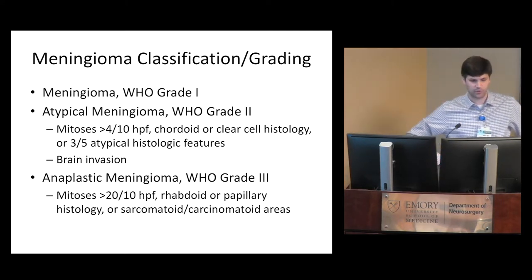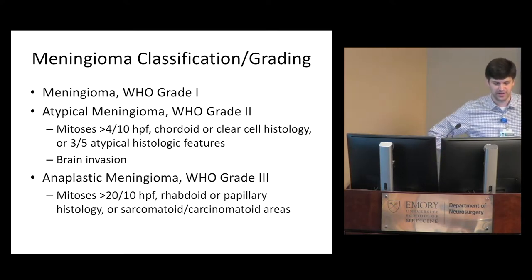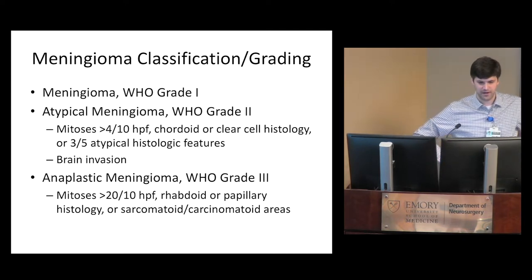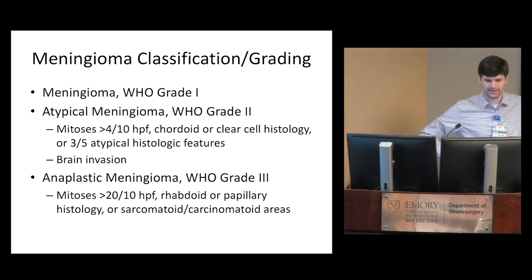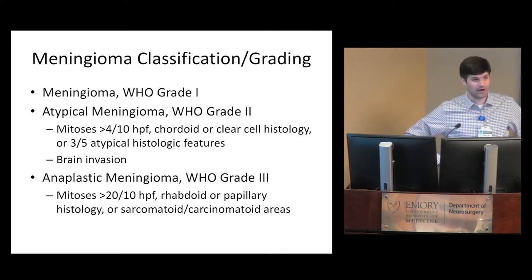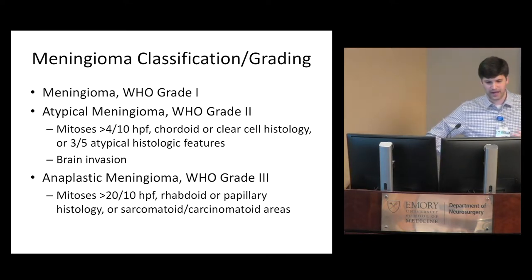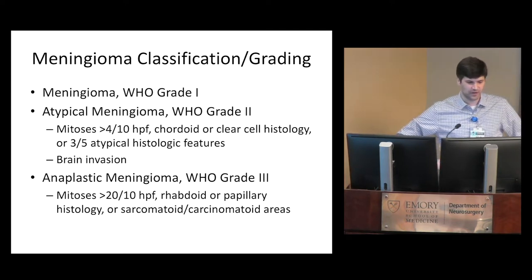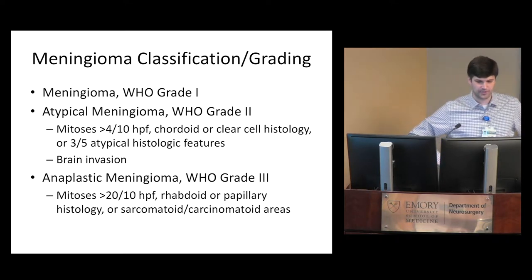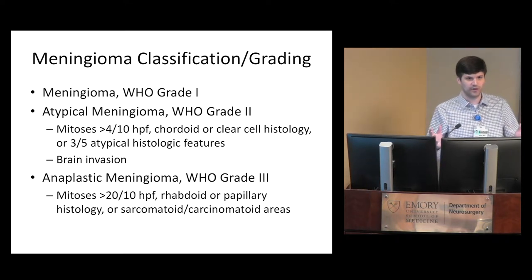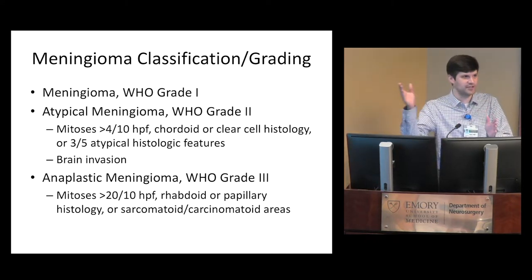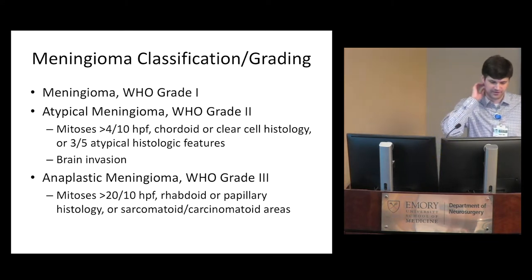Atypical meningiomas are WHO grade 2. The easiest way to define atypical is to look for increased mitotic figures. You also look for cordoid or clear cell histology — the C's are atypical. Or there's what I call the histologic grab bag: prominent nucleoli, sheeting architecture or loss of architecture, hypercellularity, small cell change, and necrosis. If you've got three out of those five features, it's a WHO grade 2 meningioma, allowing a neuropathologist to grade it even without finding mitotic figures.